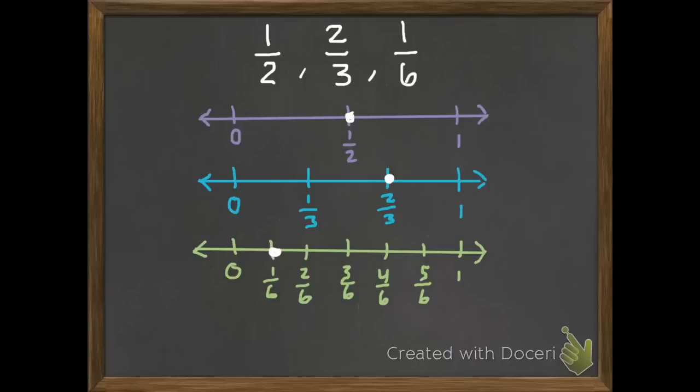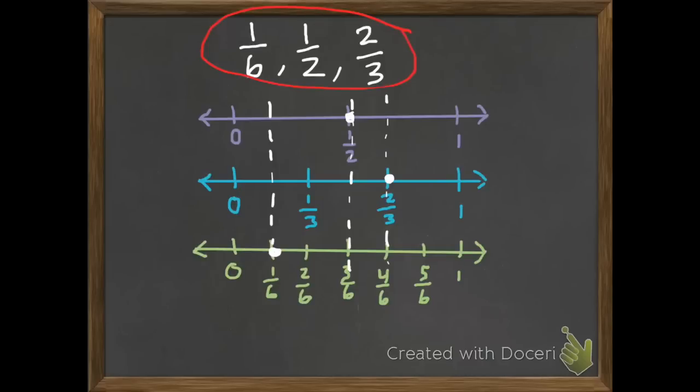If we're going to put all three of these from least to greatest, the one that is the closest to zero, and goes the least amount to the right, is one-sixth. So, that's going to go first. One-sixth is our least. Our middle fraction is one-half, which is exactly right in the middle of our number line. And our greatest is two-thirds. And that is our answer of least to greatest.